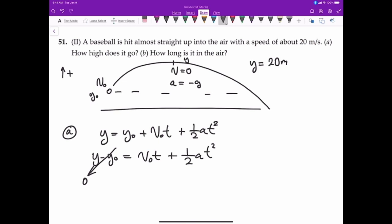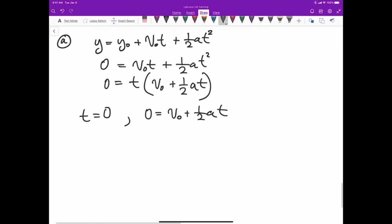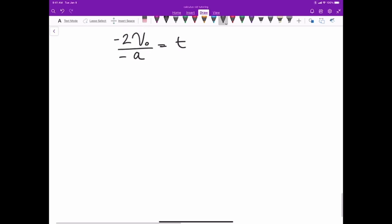So now to solve for the time, all we have to do is factor. So we factor that out. So now we can say t equals zero, and zero equals initial velocity plus one-half the acceleration times time. So we're solving for the time, the negatives cancel out, and when you plug and chug, the initial velocity is equal to 20 meters per second, and the acceleration is 9.80 meters per second squared, and that equals 4.0 seconds.